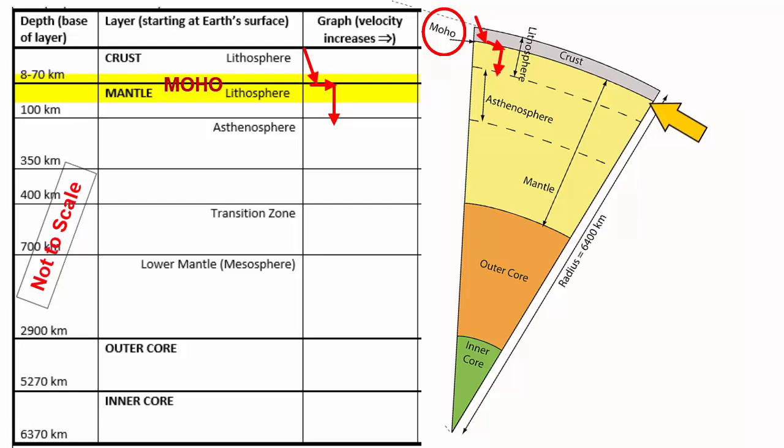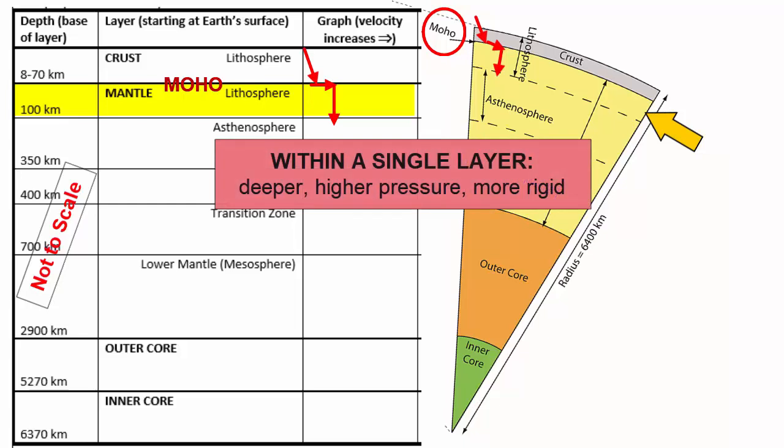As seismic waves continue to descend within the rigid part of the upper mantle, the mantle portion of the lithosphere or plates, the increasing pressure creates increasing rigidity, and there's a slow and steady increase in seismic wave velocity with the wavefront bending upwards.